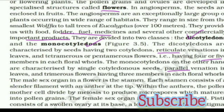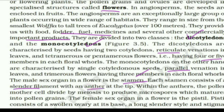The male sex organ in the flower is the stamen, which consists of a filament and an anther at the tip. Within the anthers, the pollen mother cells divide by meiosis to produce microspores, which mature into pollen grains.